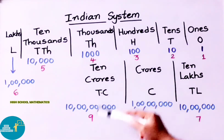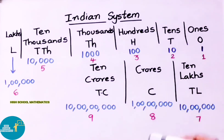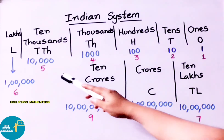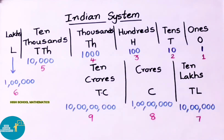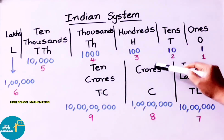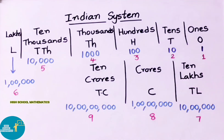Ten crores is a nine-digit number. Crores is an eight-digit number. Ten lakhs is a seven-digit number. Lakhs is a six-digit number. Ten thousand is a five-digit number. Thousand is a four-digit number. Hundred is a three-digit number. Ten is a two-digit number. One is a one-digit number.